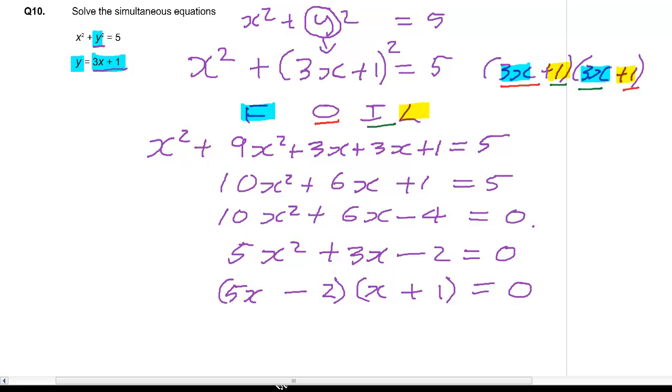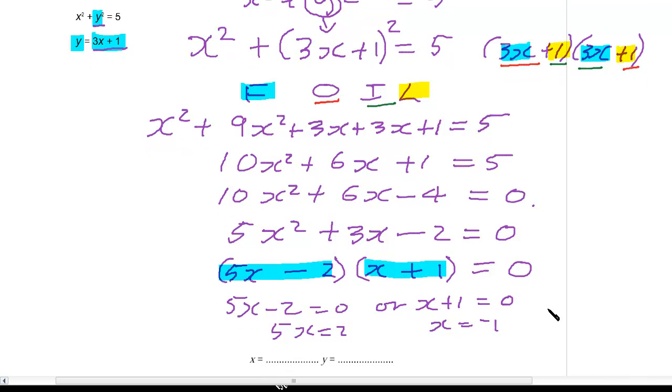Now either all of this must equal 0 or all of this must equal 0. So I get 5x minus 2 equals 0 or x plus 1 equals 0. So therefore 5x will equal 2 here and x will equal minus 1 here. And we're just running out a little bit of space. So I'm just going to write here that x equals 2 fifths. And we see x equals 2 fifths and x equals minus 1.